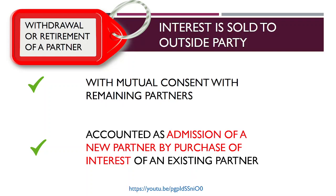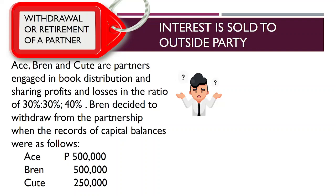If the interest is sold to an outside party, the accounting procedure to apply is the same manner as that of admission of a new partner by purchase of interest of an existing partner. To refresh ourselves, let us have this illustration. We have here three partners named Ace, Brand, and Qt, who are partners engaged in book distribution.